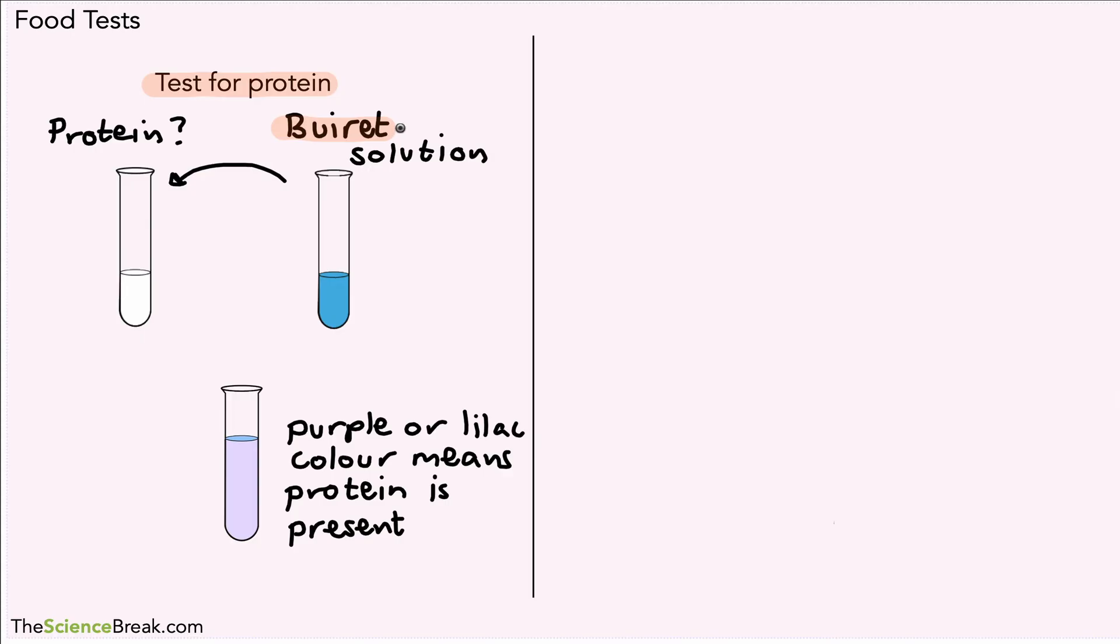The next test is for sugars, one example being glucose. Here's our solution with potentially some sugars. We use a slightly different solution called Benedict's solution. Benedict's solution looks very similar, if not the same, as biuret, so we have to be careful we get the name right.